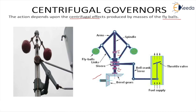There are two load conditions to consider. When the load decreases, speed increases. With increased rotational speed of the spindle, the centrifugal force on the balls — mr·ω² — increases, so the balls move upward. When the balls move upward, the sleeve also moves upward, causing the throttle valve to reduce the fuel supply, thus maintaining the mean speed.